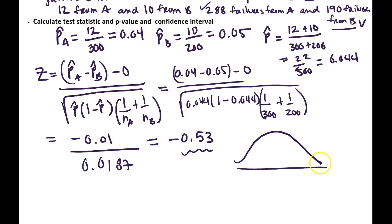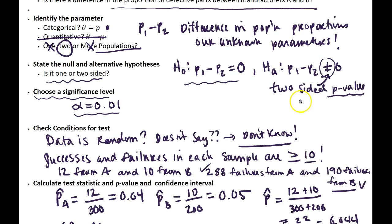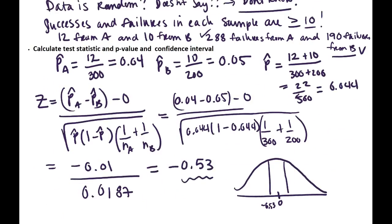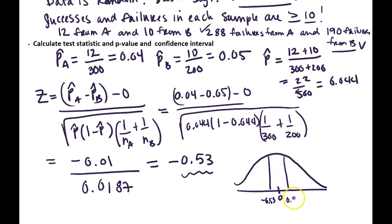To calculate our p-value, let's draw the null distribution, which is a standard normal Z distribution. Our test statistic of negative 0.53 falls about here. Because we're doing a two-sided test — a not-equals alternative — we have to find the area in both tails: the area below negative 0.53 and the area above positive 0.53. Just looking at this, we can see this is probably going to be a pretty large p-value.